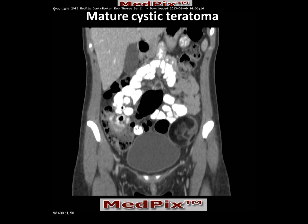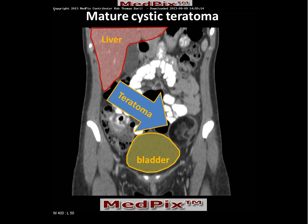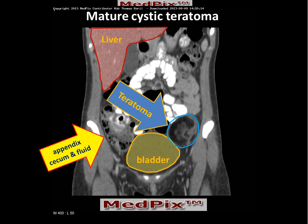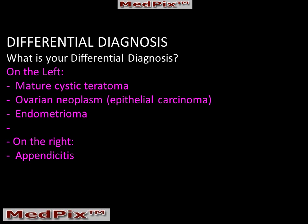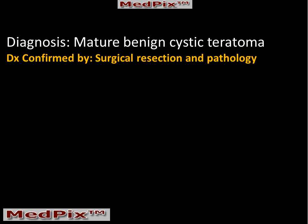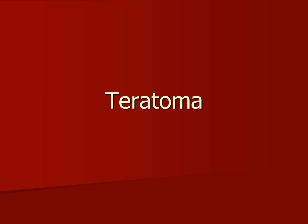Looking at the coronal image, the liver, the bladder, and this teratoma in the left lower quadrant. The patient also had appendicitis, which was confirmed at surgery — so this is a patient who has a twofer. The patient has a mature cystic teratoma, and the patient also does have appendicitis. This was confirmed by surgical resection.